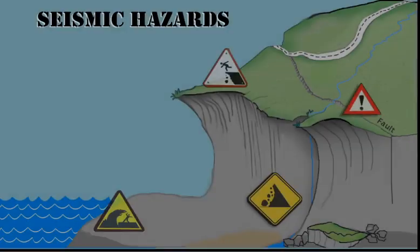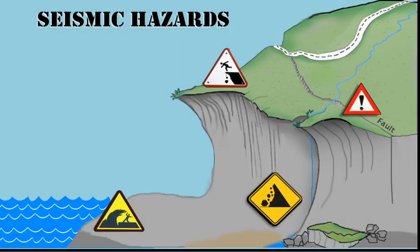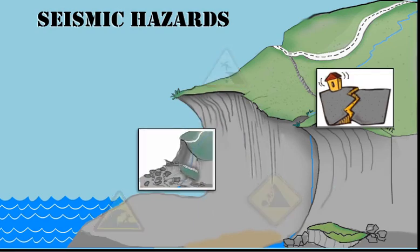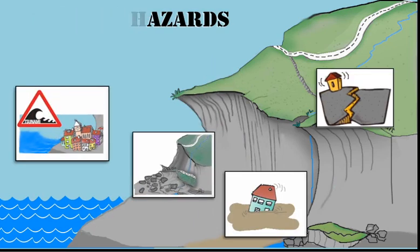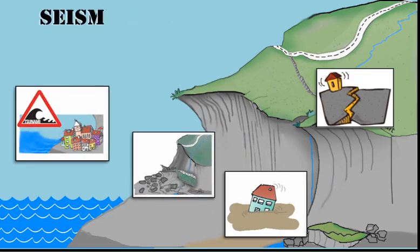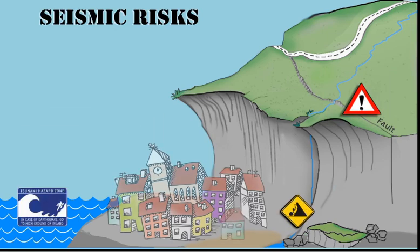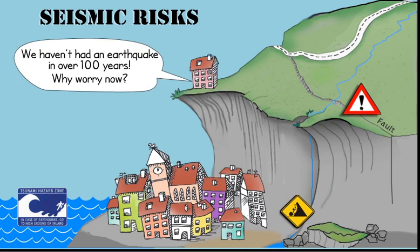A seismic hazard is the probability of ground shaking due to earthquakes and other effects of earthquakes, including ground rupture, landslides, tsunamis, and soil liquefaction. Seismic risk is the likelihood that humans might sustain injuries and fatalities, plus economic losses due to the hazard.